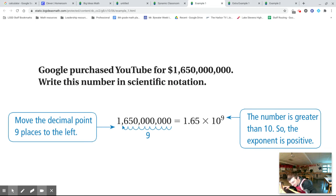So see, 1.65 is between 1 and 10. Count those places, make that the exponent. Boom. There it is.